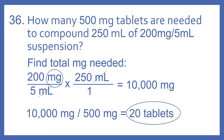So 200 times 250, then divided by 5, equals 10,000 milligrams. That's the total amount that we'll need. And then if we take 10,000 milligrams divided by 500 milligrams per tablet, that gives us 20 tablets — that's what we'll need to compound 250 milliliters of 200 per 5 suspension.